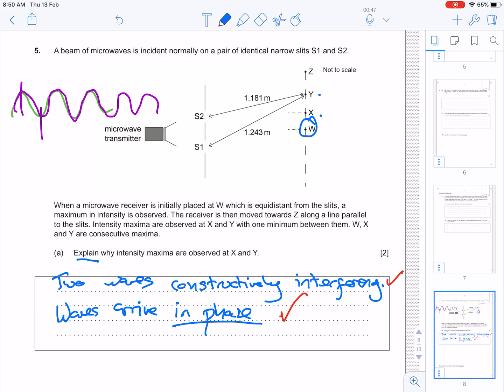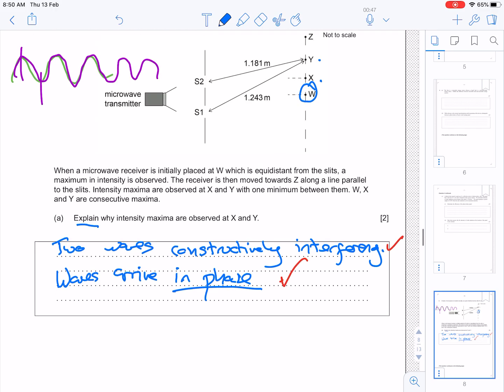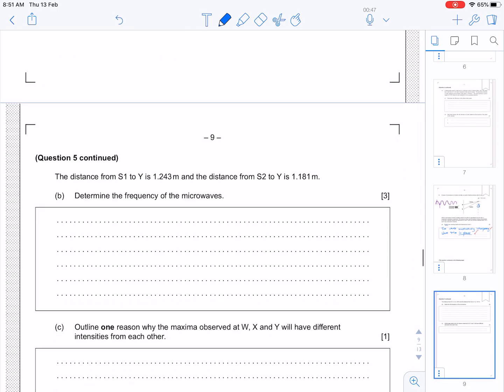So, there are, again, other ways of saying this. You could say that they have a path difference of a whole number of wavelengths, or an integer number of wavelengths. But in phase is probably the quickest way to say it.